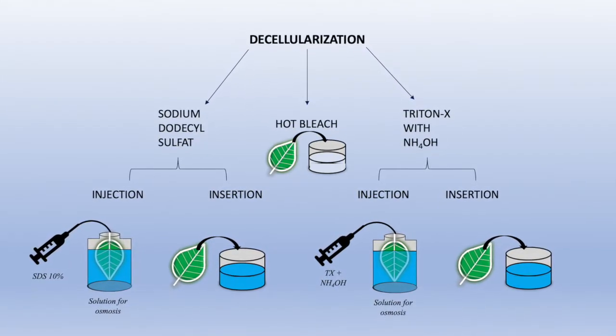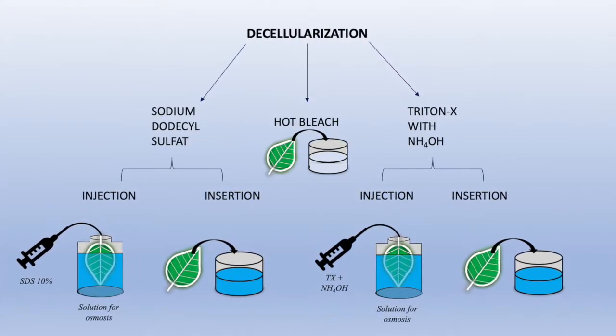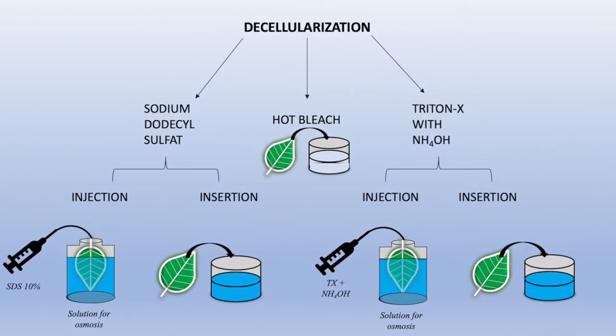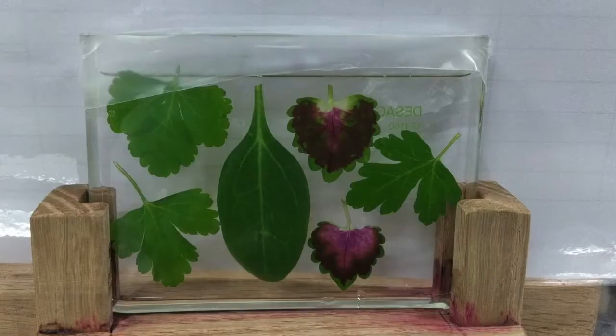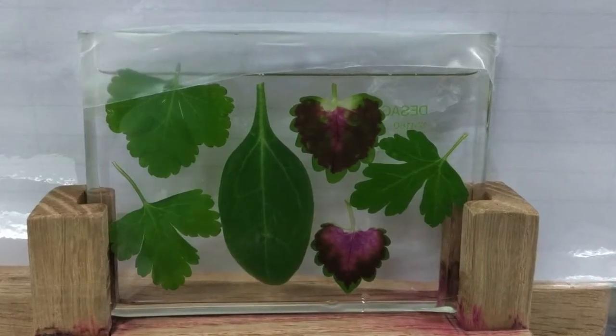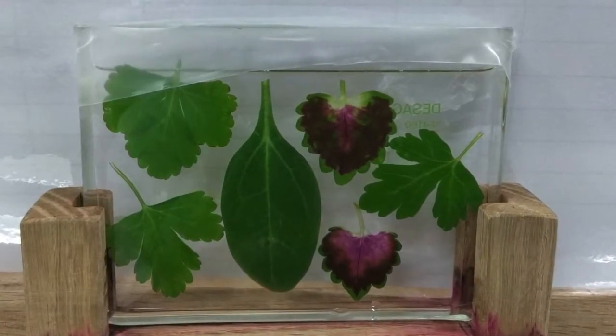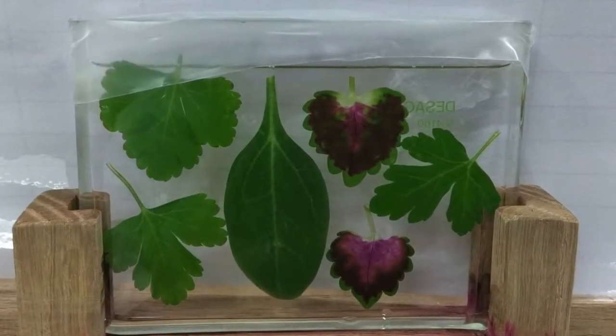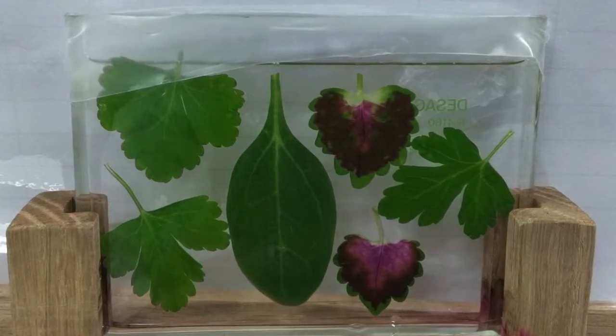Decellularization is most effective with a 10% SDS solution. For further experiments this method was used. Therefore, the plants were hung for three days in SDS in the container and covered with parafilm to prevent evaporation.